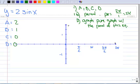In other words, my period is 2 pi, so I want to graph just a pure sine graph with the period of 2 pi. In other words, I don't want to make any changes here.